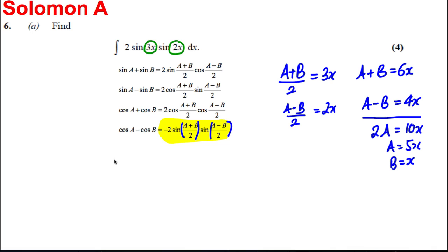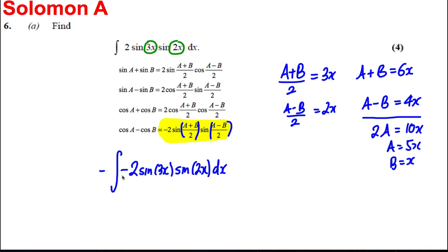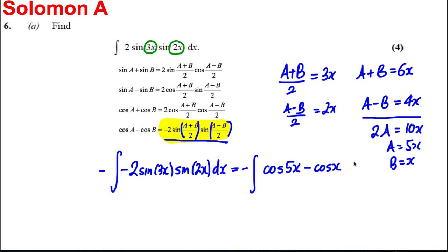We want the integral of this. Let's put a minus sign in and place a minus on the outside — we've made no difference. This is negative the integral of cos(a) - cos(b), which is negative the integral of cos(5x) - cos(x), with respect to x.